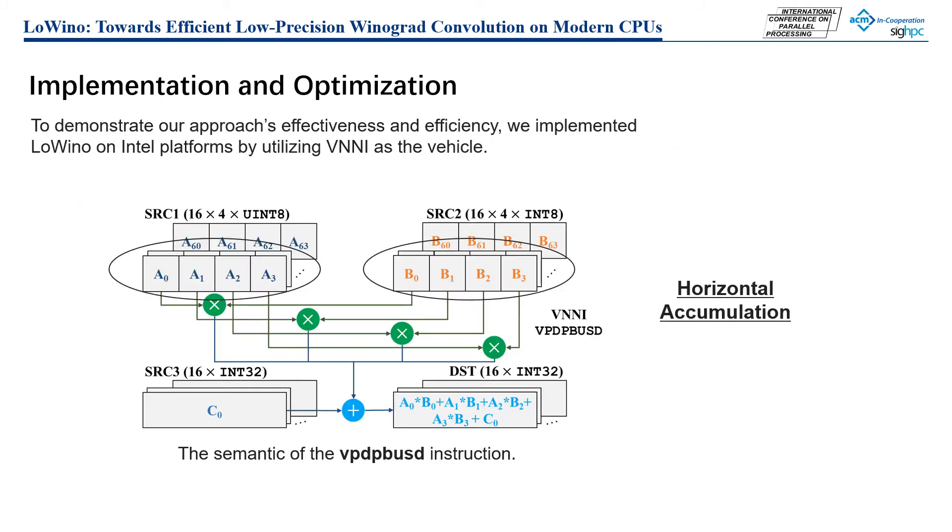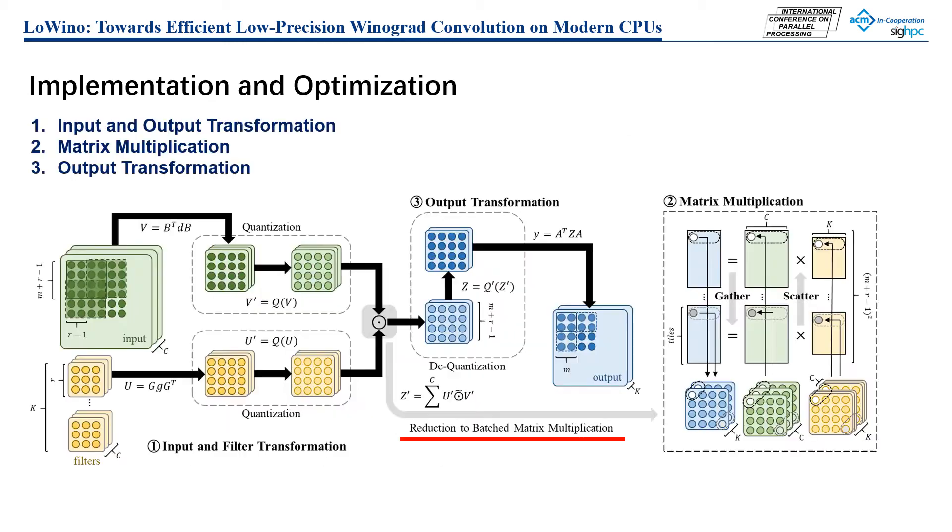To demonstrate our approach's effectiveness and efficiency, we implemented our method on Intel platforms by utilizing VNNI instructions. The low-precision computation performs a horizontal accumulation operation. In our implementation, there are three major paths: input and filter transformation, matrix multiplication, and output transformation. To achieve high performance, the element-wise multiplication is converted to batched matrix multiplication by scattering and gathering operations.